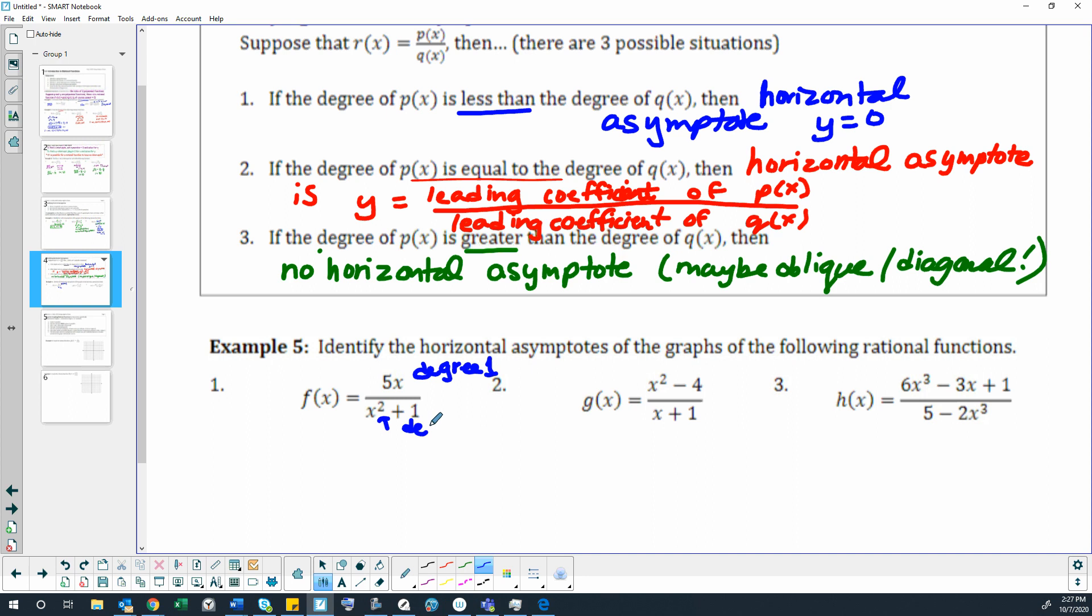The denominator is degree two. It's quadratic. So when we have the degree of the numerator is less than the degree of the denominator, that's when our horizontal asymptote is at y equals zero.